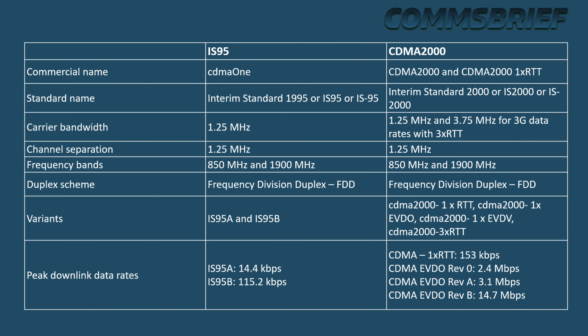Let's have a look at this table that shows all the key network technologies used for the different generations of mobile networks. CDMA 2000 is one of the key 3G technologies just like UMTS. Let's now look at this second table, which may look a bit busy at first, but let's go through these rows bit by bit. One of the best ways to learn about a new technology is to compare it with an earlier technology, and that's what we will do here — we will compare CDMA 2000 with IS95.